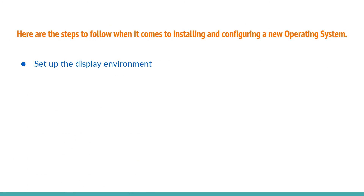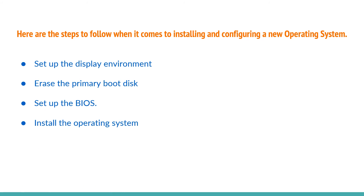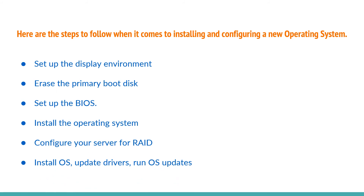Here are the steps to follow when installing and configuring a new operating system: first, set up the display environment; next, erase the primary boot disk; third, set up the BIOS; fourth, install the operating system; fifth, configure your server for RAID; and last, install OS update drivers and run operating system updates.